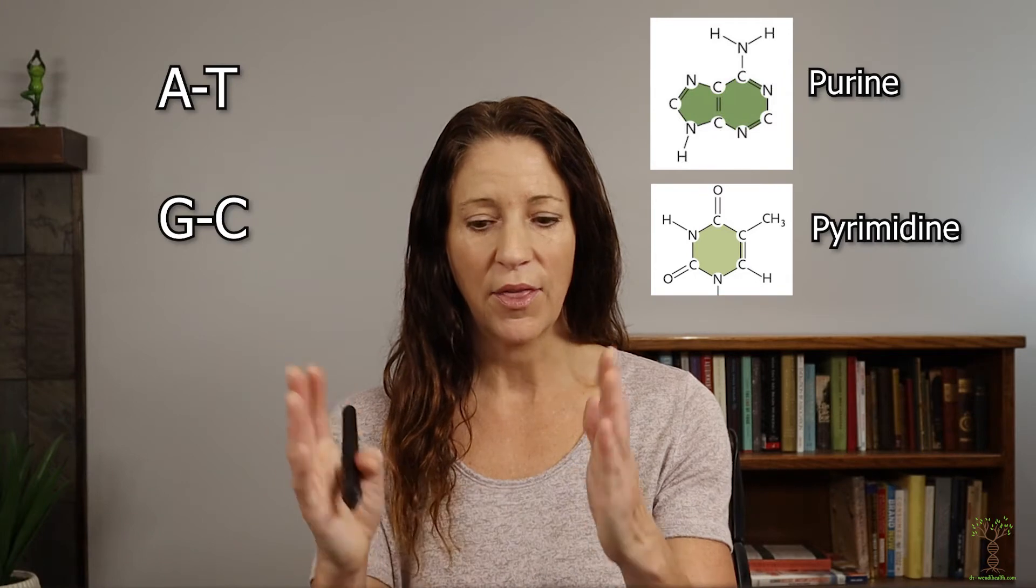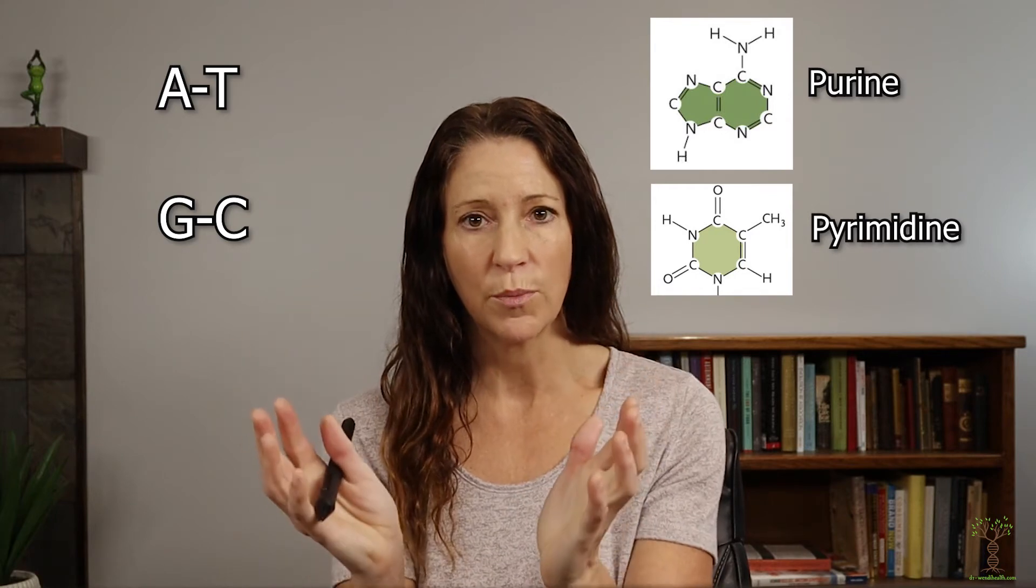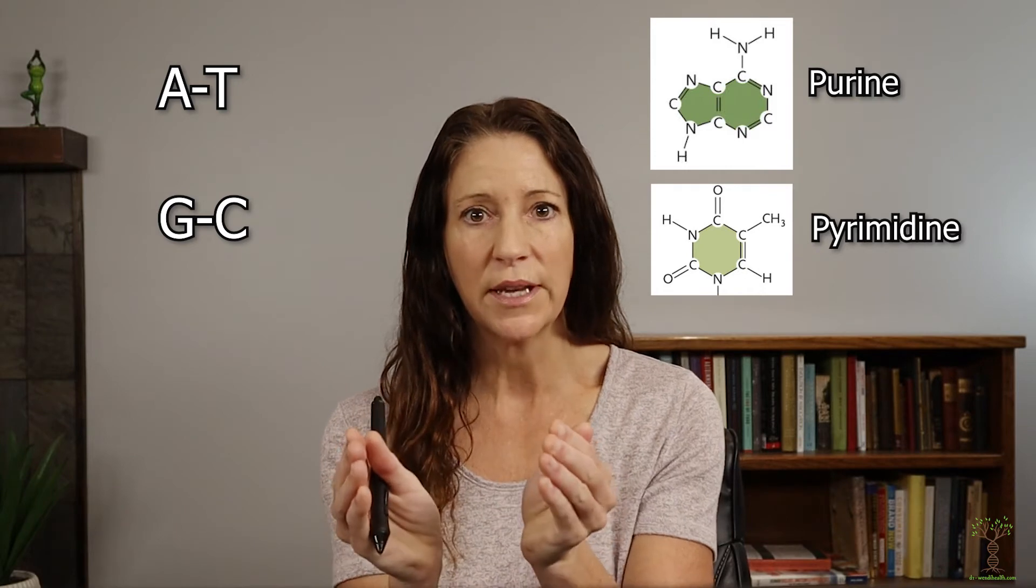Before we look at how the process occurs I want to just point out a few different things. Adenine and guanine are the double ringed bases and they are called purines. Cytosine and thymine are the single ringed structures and they are called pyrimidines. A purine always has to combine with a pyrimidine. That's how the DNA molecule stays symmetrical. If you put two purines together it would cause a bulge in the DNA or if you put two pyrimidines together there would be a little indent in the DNA and then that would be a mutation.